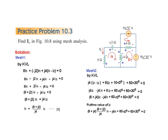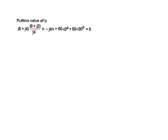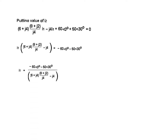Now we substitute the value of i2 from mesh one in terms of i1, and simplify further by taking i1 common from those two terms. We move the other terms to the right-hand side. From here, i1 can be found as the numerator divided by the bracket term, but we need to simplify it further.